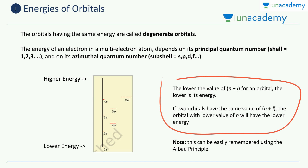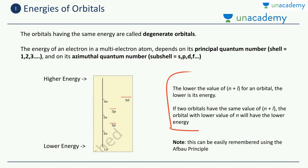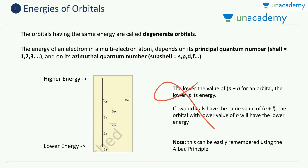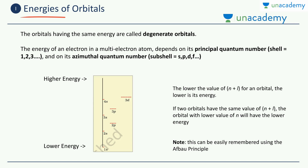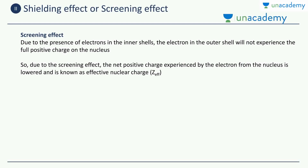If you find the n plus l rule difficult to remember, there is another approach: the Aufbau principle diagram, which we will study in this video. You can remember that diagram and easily find the order of increasing energies of the orbitals. This was our discussion about how energies are arranged in increasing order, and why that order is important — we'll see that in the Aufbau principle.